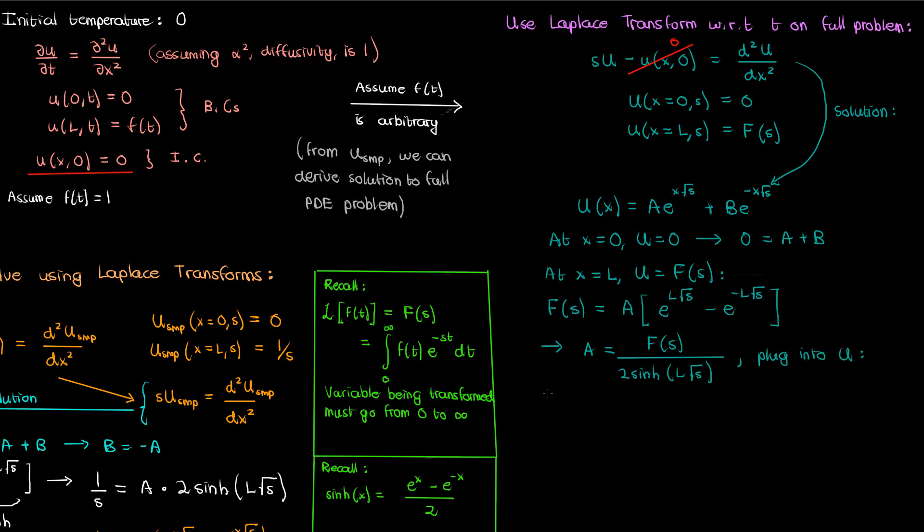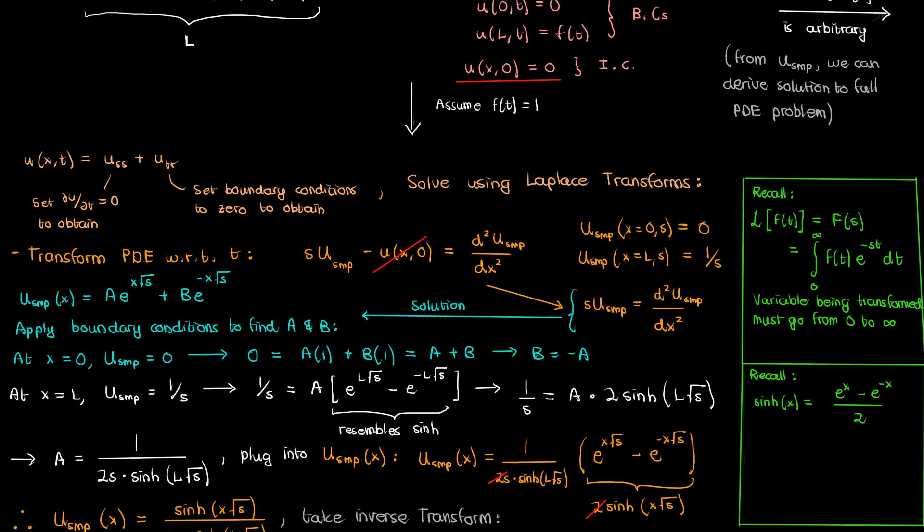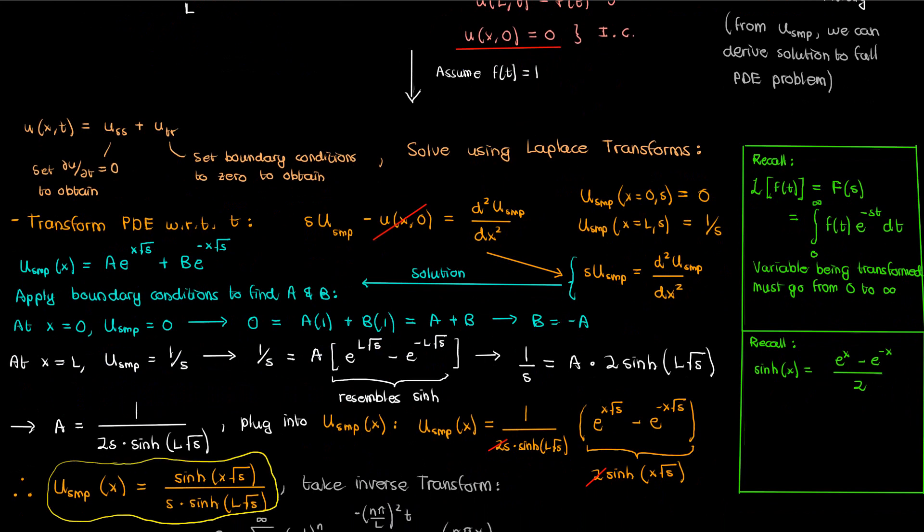Let's now plug this into our expression for capital U, and if we do that we'll get U of x equals capital F of S times the hyperbolic sine of x times the square root of S divided by the hyperbolic sine of L times the square root of S. Now we want to get to a point where the inverse Laplace transform of capital U incorporates the inverse Laplace transform of the simpler U sub SMP, and in order to do this we'll multiply and divide the expression for U by S.